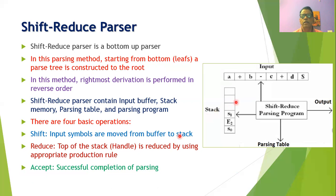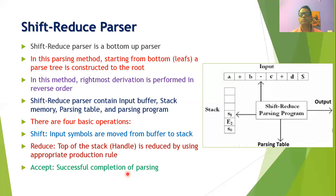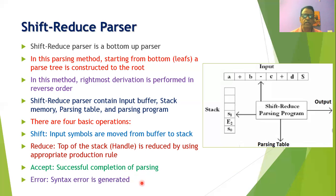If all input symbols are exhausted and the stack contains only the start symbol, we announce successful completion of parsing and declare the input string belongs to the grammar. If that is not the case, an error is generated called a syntax error. The parsing program controls all overall operations of the shift reduce parser, with one pointer to the input buffer and another to the top of the stack.